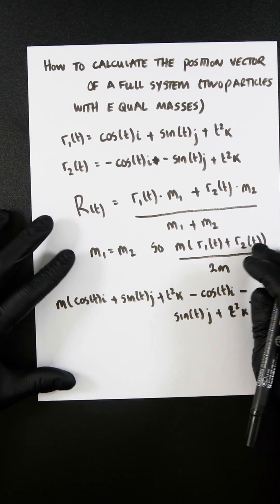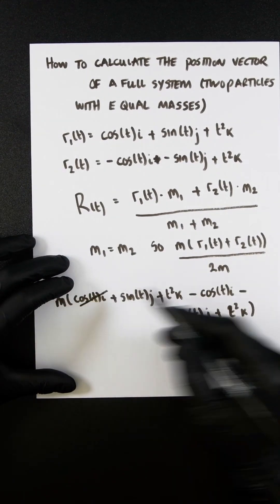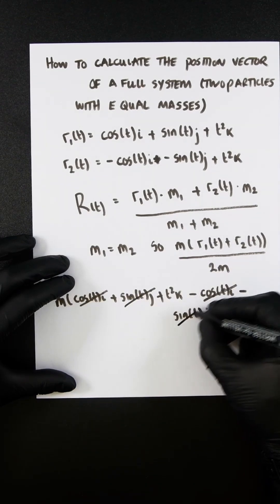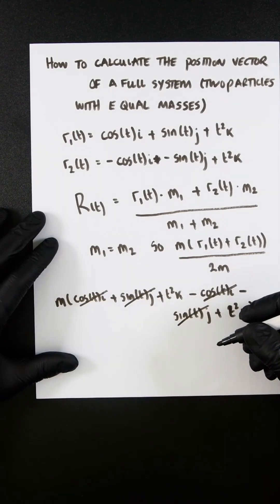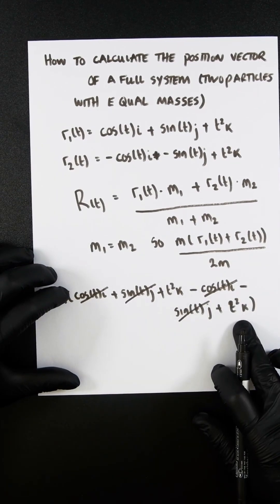Looking at the numerator, cos(t)i minus cos(t)i cancels, and sin(t)j minus sin(t)j cancels. So we've got t squared k plus t squared k.